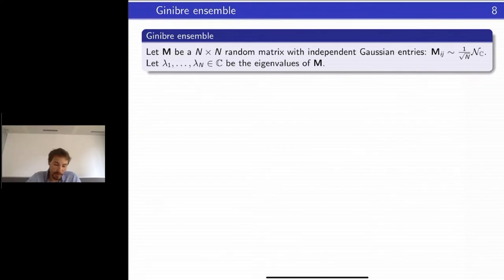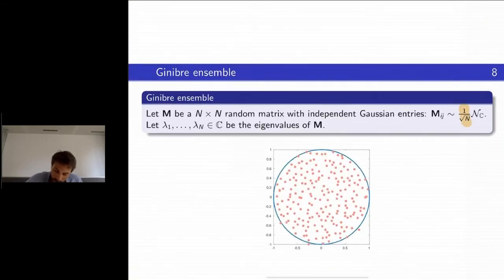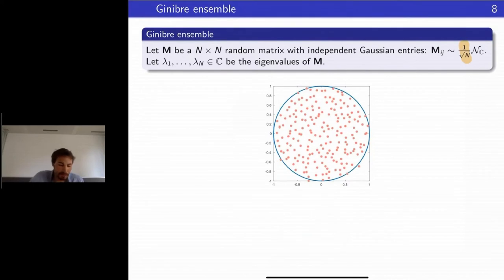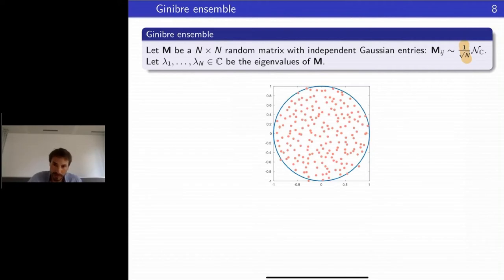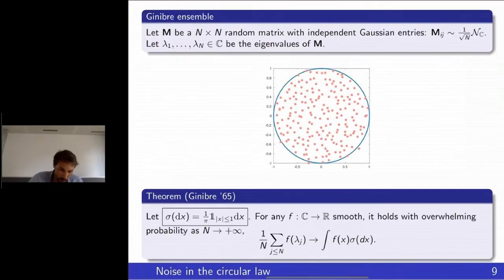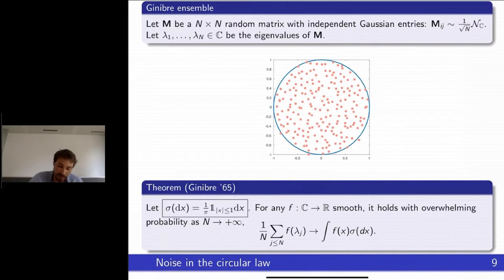The Ginibre ensemble is an N × N matrix with independent complex Gaussian entries with variance 1/√N. I denote the N eigenvalues by λ_i. With this normalization the eigenvalues live in the unit disk. A typical picture shows a point process that is not Poissonian — the points repel each other and are much more uniformly distributed than a Poisson process, with very few points escaping the disk.